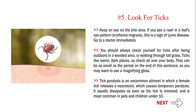Ticks like warm, dark places, so check all over your body. They can be as small as the period on the end of this sentence, so you may want to use a magnifying glass. Tick paralysis is an uncommon ailment in which a female tick releases a neurotoxin, which causes temporary paralysis. It usually dissipates as soon as the tick is removed, and is most common in pets and children under 10.